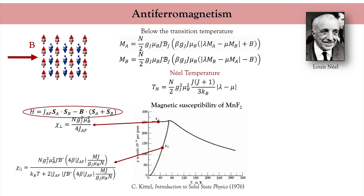When the temperature is above the Néel temperature, the system is paramagnetic and we retrieve the usual Curie law for paramagnets, but with an offset in temperature.